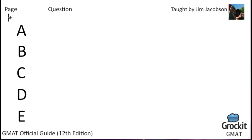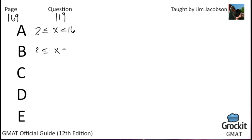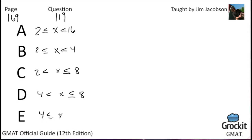We've moved on to the next page, page 169, number 119. We have various expressions: 2 less than or equal to x, less than 16, less than 4 — and that was less than or equal to. Those are our answer choices. Which of the following is equivalent to the pair of inequalities x plus 6 is greater than 10, and x minus 3 is less than or equal to 5?